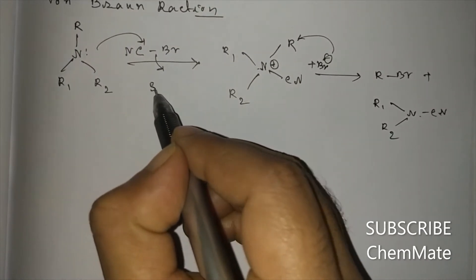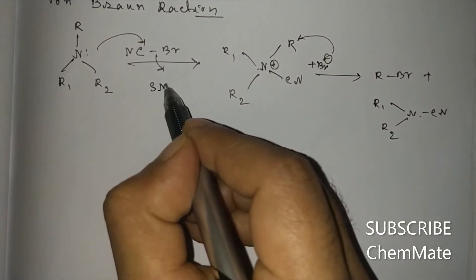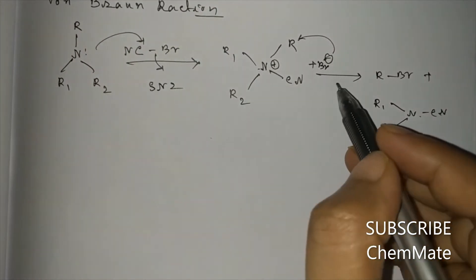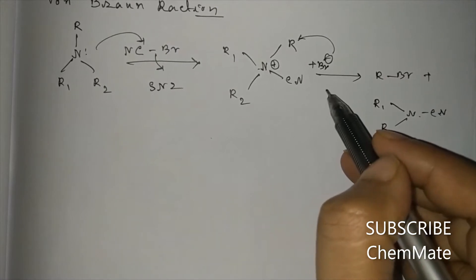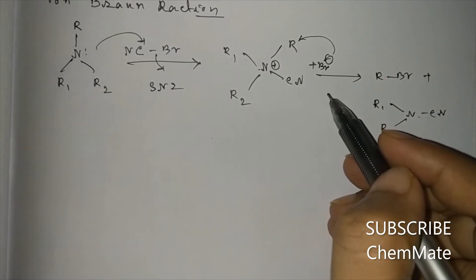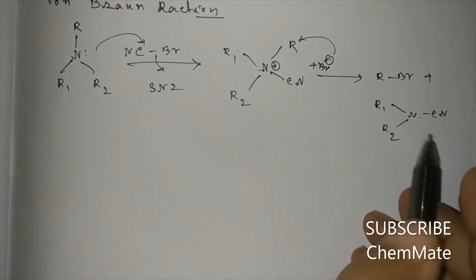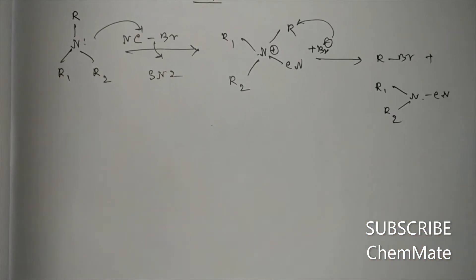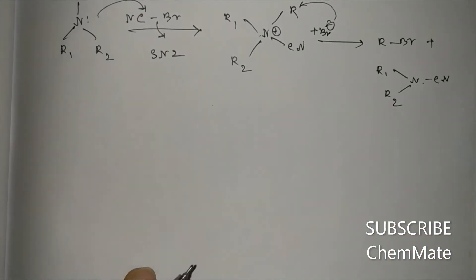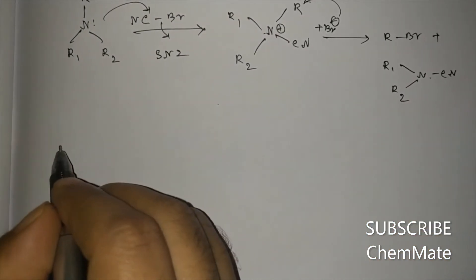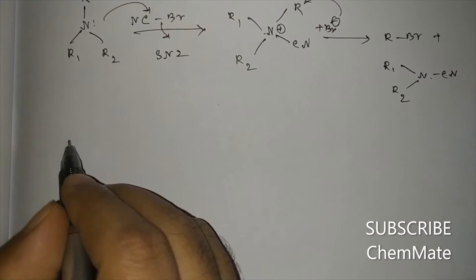Now, this is an SN2 type reaction, and sometimes it can also proceed by an SN1 type mechanism depending on the substrate. Now we will go through some examples.